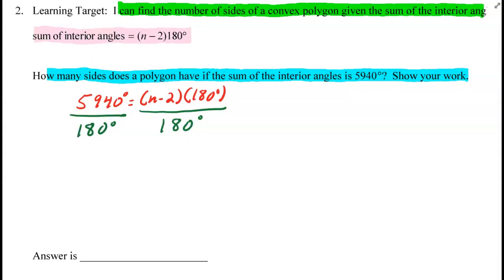Doing that, the 180 degrees reduces to 1, so we get 33 equals n minus 2. Then we add 2 to both sides.